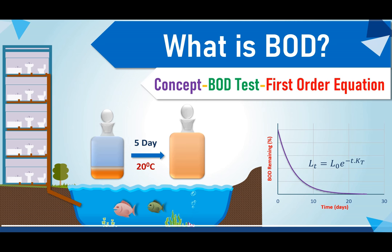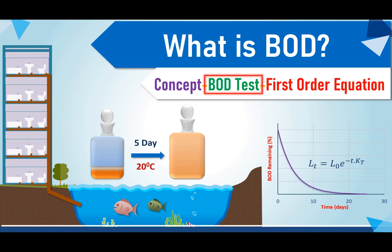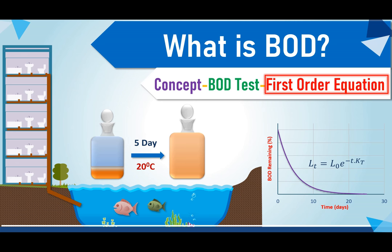Hello everyone. In this video we are going to discuss what is BOD — biochemical oxygen demand — a very important parameter of environmental engineering. This video has been divided into three parts: first, we'll understand the concept of what BOD actually literally means; second, we'll discuss the BOD test and how it is determined in the laboratory; and third, we'll be talking about the first order equation or kinetics. We'll use animations and graphics to make it easier to understand.